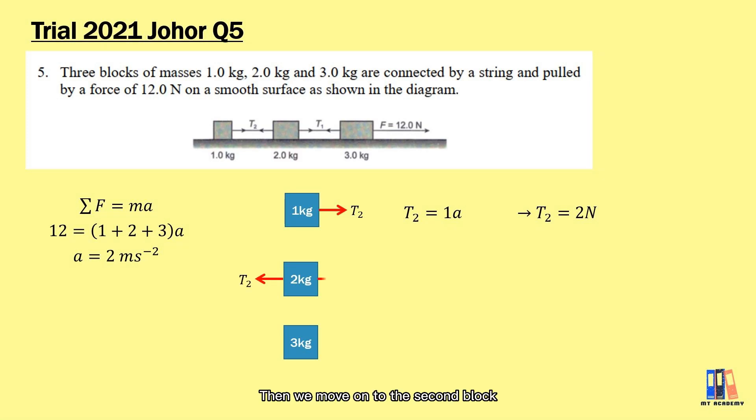Then we move on to the second block. It is subjected to the tension from the first mass and also from the third mass. We know it is moving to the right, so the equation will be T1 minus T2 equals the mass 2 kg multiplied by the acceleration, 2 m/s². Solving this equation will give us the tension T1 equals 6 newtons.